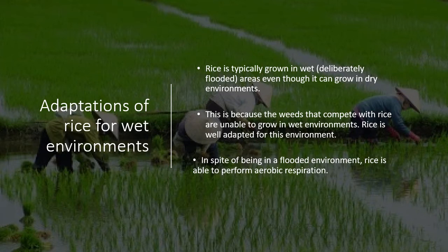In spite of being a swampy environment, rice is able to perform aerobic respiration. For most plants, if you were to submerge them in water, they would die because they would not have enough oxygen or CO2 to undergo respiration or photosynthesis — they would not be able to do sufficient gas exchange and simply would not survive, because gas exchange in water is very slow. Rice doesn't behave in the same way, and that is why it is really peculiar and part of your syllabus.